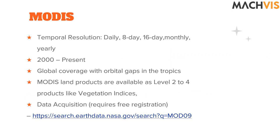MODIS provides daily updates, though different spectral bands are updated on different schedules. Some maps are updated on a yearly basis. We have continuous data from 2000 onward, which is very useful if you want to study climate change over the last 20 years, providing a very good reference.